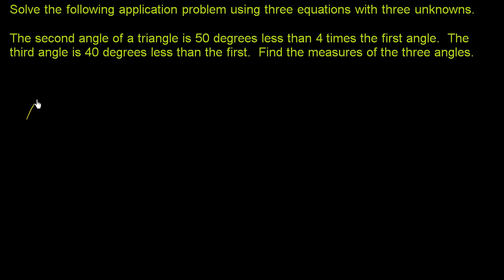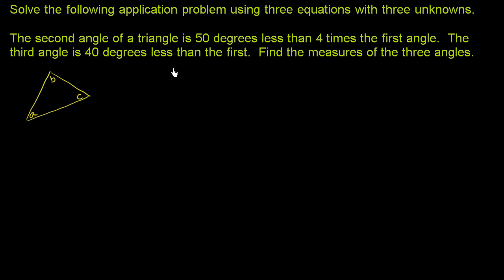Let's draw ourselves a triangle here. Let's call the first angle A, the second angle B, and the third angle C. Before we even look at these constraints, one property we know of triangles is that the sum of their angles must be 180 degrees. So we know that A plus B plus C must be equal to 180 degrees.